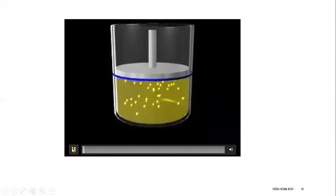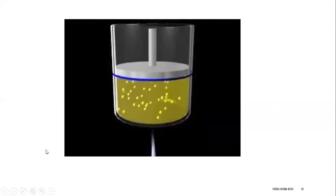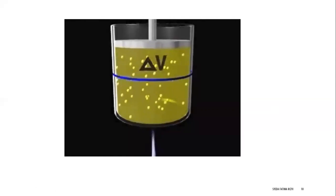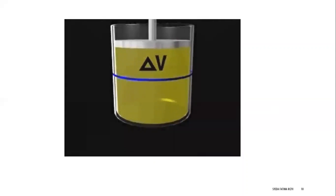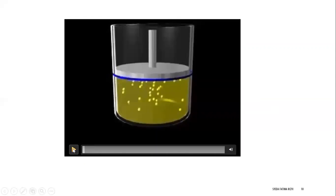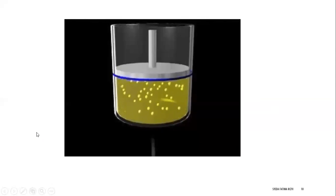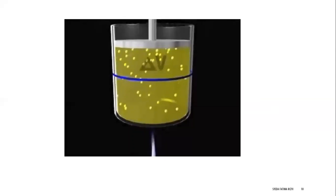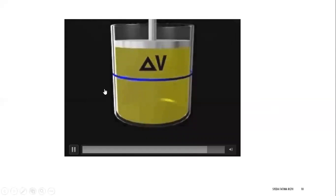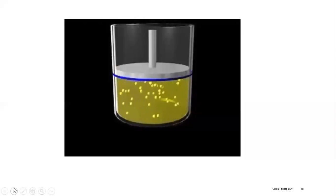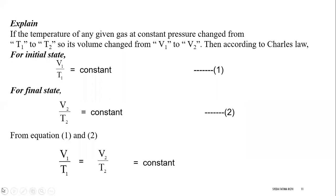Let's see this through the animation. We give flame to the gas; the particles start to move. Because of the particle movement, the volume increases. The animation confirms that as temperature increases, particles spread further apart and volume increases. This means temperature is directly proportional to volume — that is Charles' Law. Mathematically, V over T equals constant, so V1/T1 equals V2/T2.